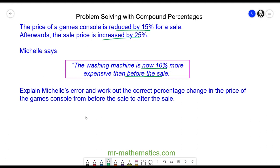Well Michelle's mistake is that she's worked out 100%, which is the right thing to do. She's taken away 15%, which again is correct. So she's got 85%, which is right. And then she has added on 25% to the 85%, which is the increase here. So she's got 110%. So she thinks it's 10% more expensive because 110% take away the original 100% does make 10%.